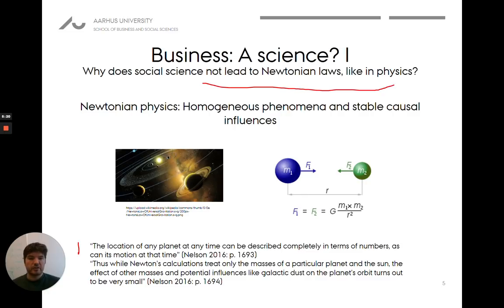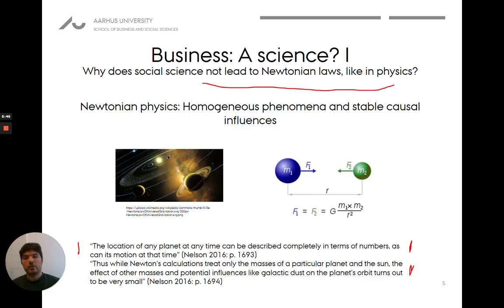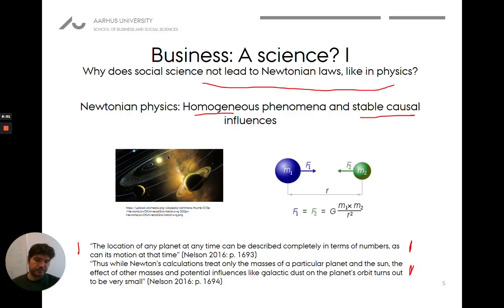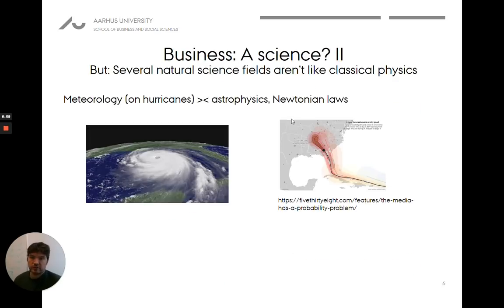We can do that because we can exactly measure what a planet is and define its essence, while ignoring other factors like galactic dust, comets, or spaceships — they're just too small and insignificant. We can still make very good predictions even though we ignore all these factors. The state of the art in physics gives us these homogeneous phenomena: we measured one hydrogen atom and we measured them all, and we can ignore a bunch of other factors.